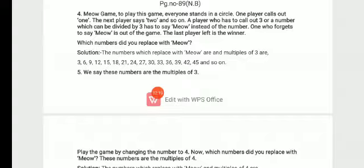So which numbers do you have? Three, six, nine, twelve, fifteen, eighteen, twenty-one, twenty-four, twenty-seven, thirty, thirty-three, thirty-six, thirty-nine, forty-two, forty-five and so on.